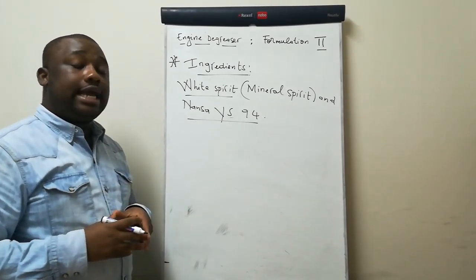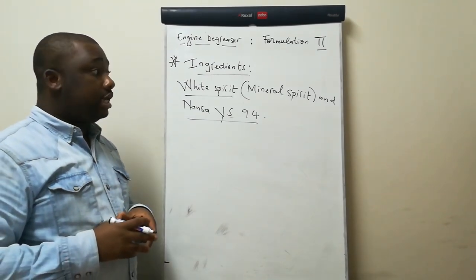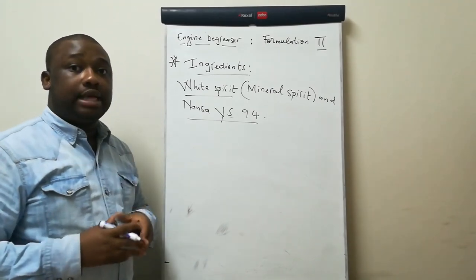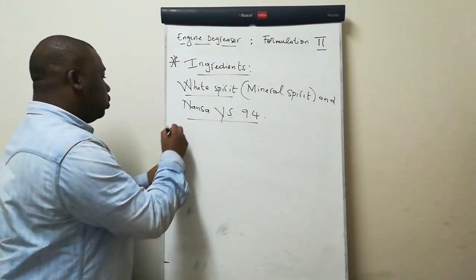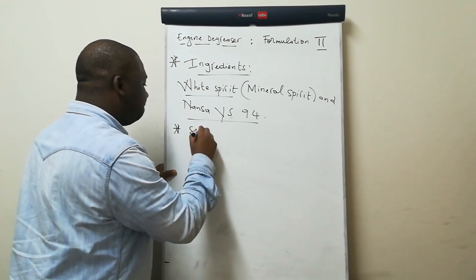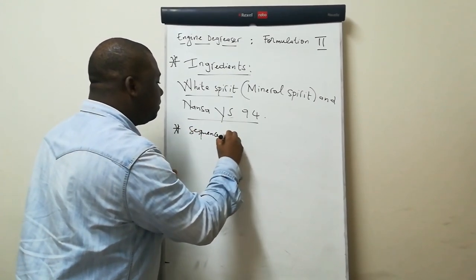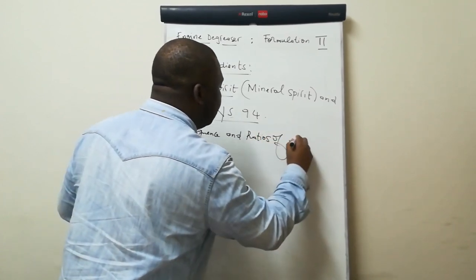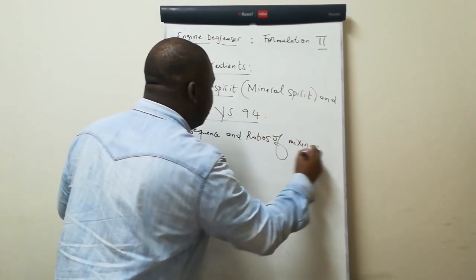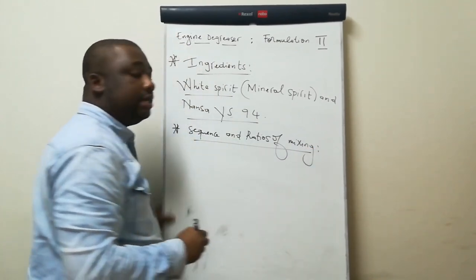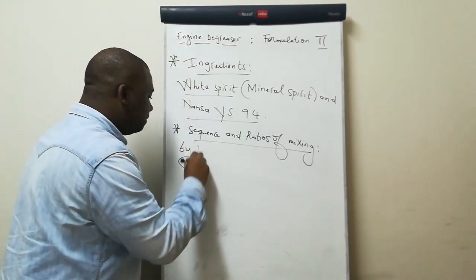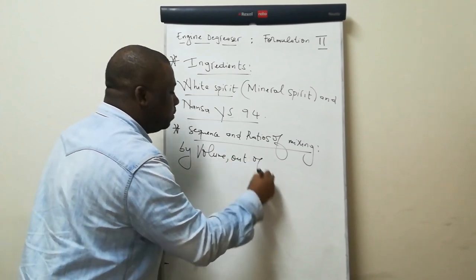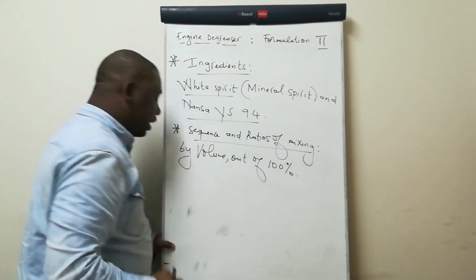Now, we can get to the sequence and ratios of mixing ingredients. I'll show you in which sequence to mix them and the related amount of each. So let's say sequence and ratios of mixing. This is done by volume out of 100%.